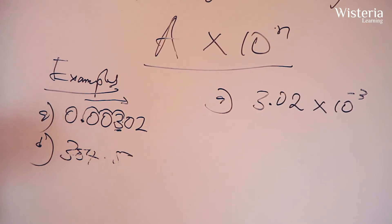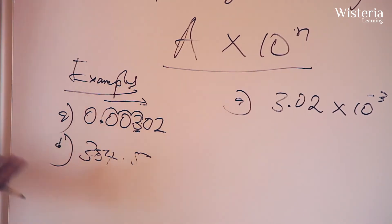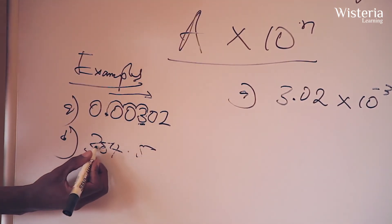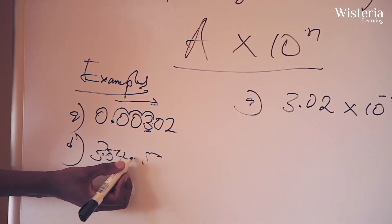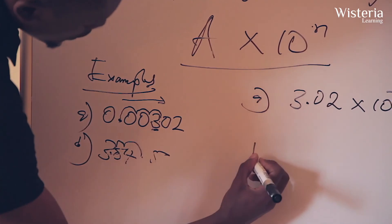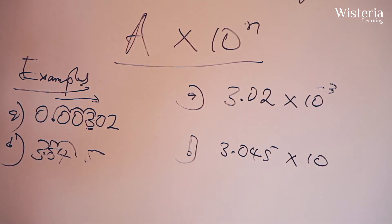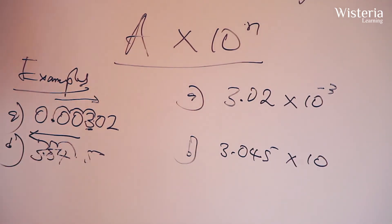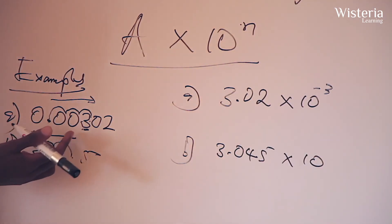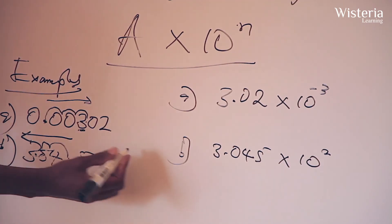We move on to the next example: 304.5, which we want to express in scientific notation. This is a large number. The decimal point has to be moved to the left so that it sits between the 3 and the 0. The decimal point moves two places to the left. Therefore, we write the number as 3.045 times 10. When you move the decimal point to the left, the exponent is positive, and the number of places moved is 2. Therefore, 304.5 in scientific notation is 3.045 times 10 to the power positive 2.